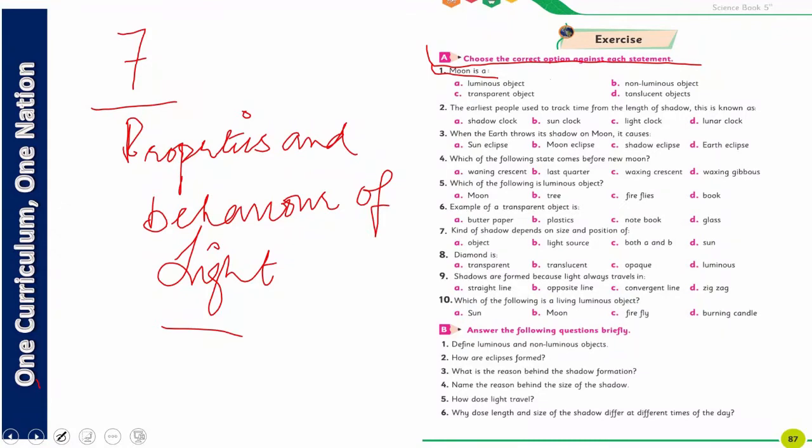Moon is luminous object, transparent object, non-luminous object, translucent? So what is it? You have studied luminous or non-luminous. This is non-luminous. The earliest people used to track time from the length of shadow. This is known as what? So sundial is the correct answer.